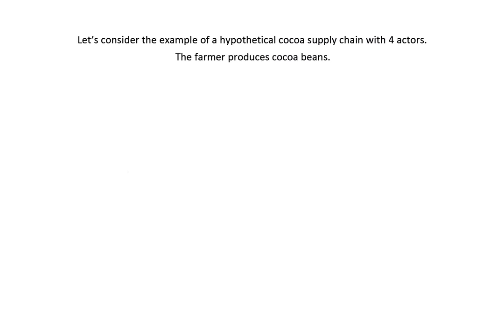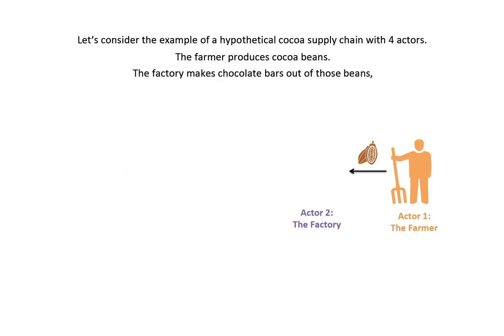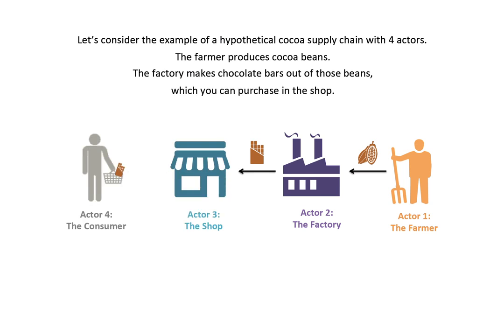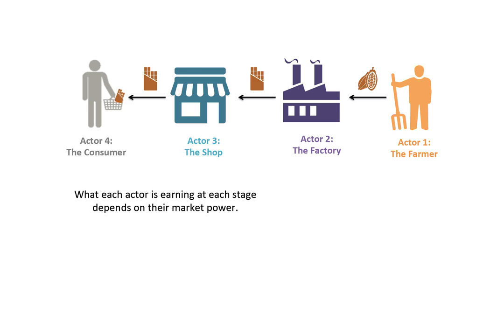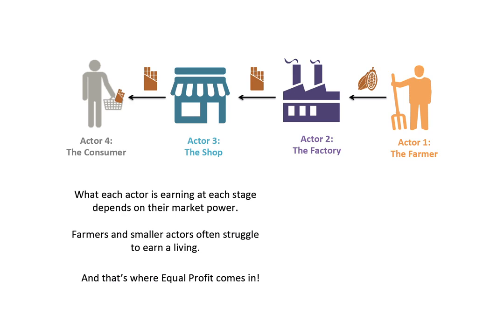The farmer produces cocoa beans. The factory makes chocolate bars out of those beans, which you can purchase in the shop. What each actor is earning at each stage depends on their market power. Farmers and smaller actors often struggle to earn a living. And that's where Equal Profit comes in.